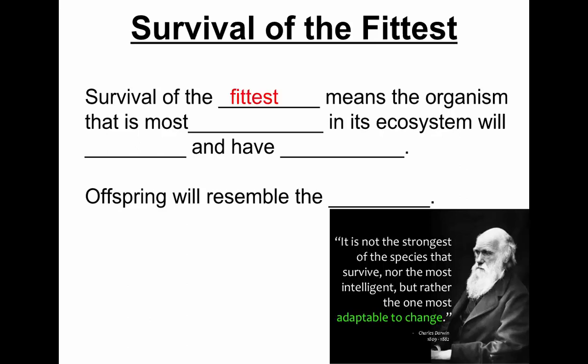Survival of the fittest means that the organism most successful in its ecosystem will survive and have offspring, and those offspring will resemble the parent. Darwin said it's not the strongest of the species that survive, nor the most intelligent, but rather the ones that are most adaptable to change.